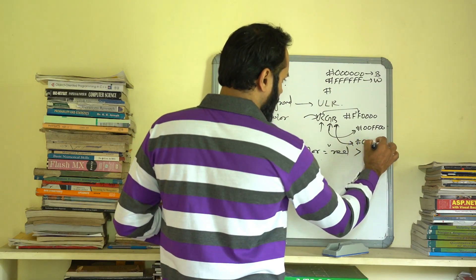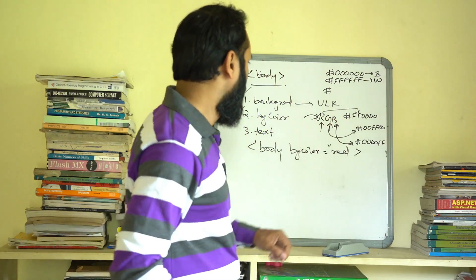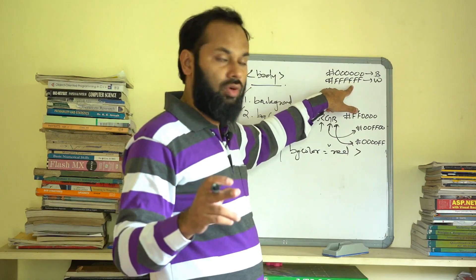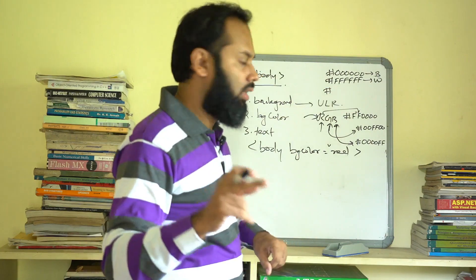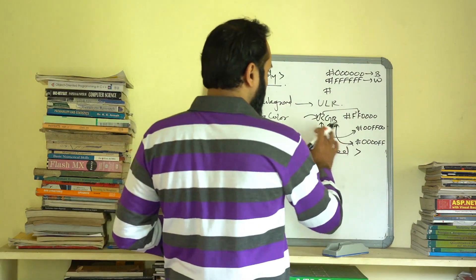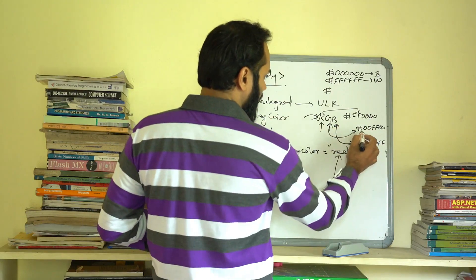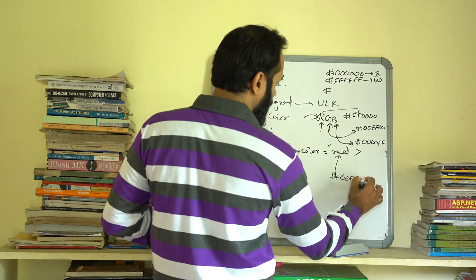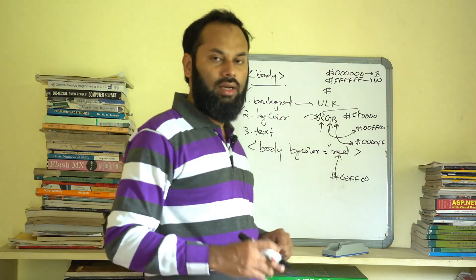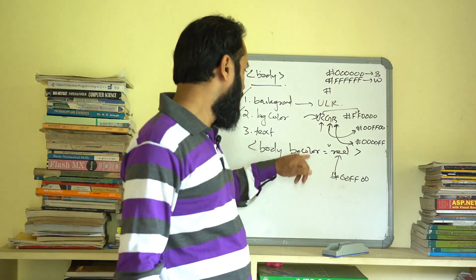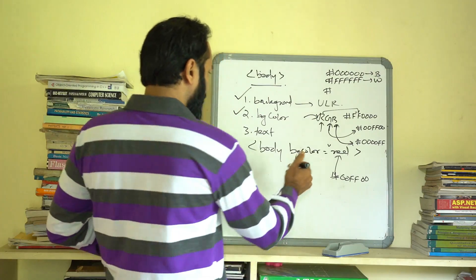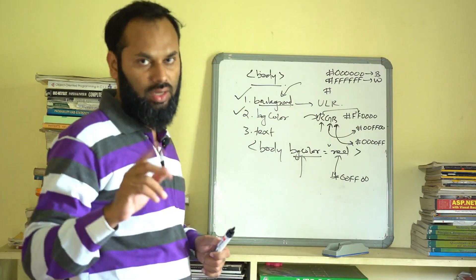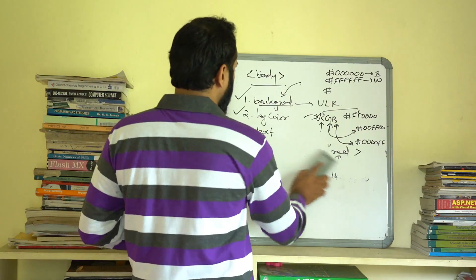In the RGB color system, R stands for red, G for green, and B for blue. For the color red, the combination is hash FF0000 — FF in the red position, and 00 for green and blue. If no background is set, there is no background color. This is what we learned about the bgcolor attribute.